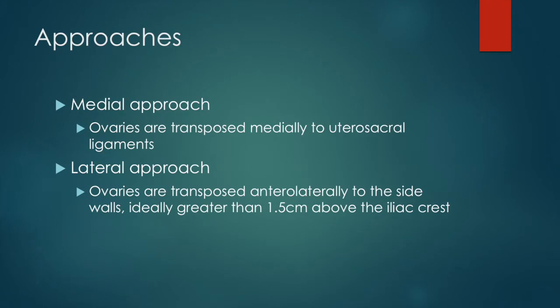There are two surgical approaches described for laparoscopic ovarian transposition: the medial approach and the lateral approach. In the medial approach, the ovaries are transposed medially behind the uterus to the utero-sacral ligaments. This is an option when the patient is going to have anterior field radiation. The lateral approach is used in cases of cervical or rectal cancer, most typically, when more extensive radiation is planned. This involves transposing the ovaries as high as possible to the anterolateral sidewall, depending on the planned radiation field.